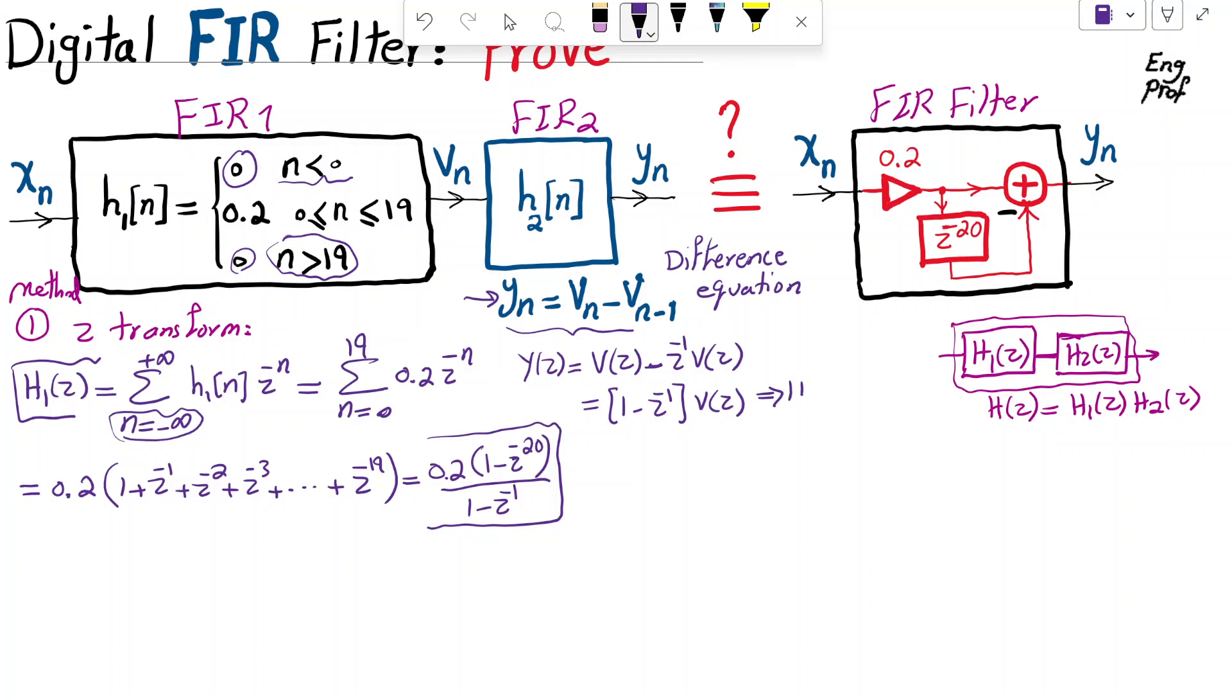Therefore, we can say H2 Z, which is the output for the second system, which is output Y of Z divided by its input V of Z, is just 1 minus Z minus 1.